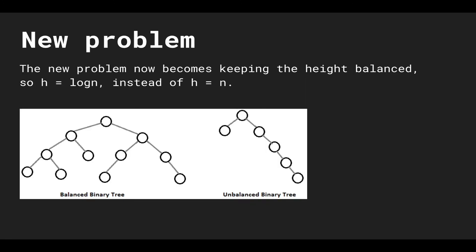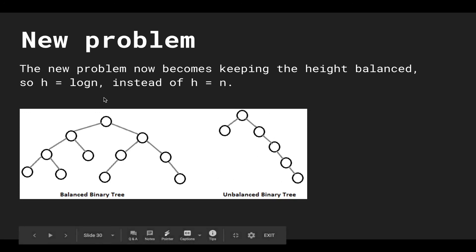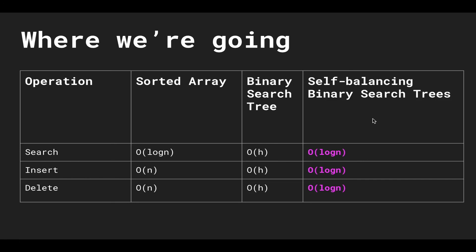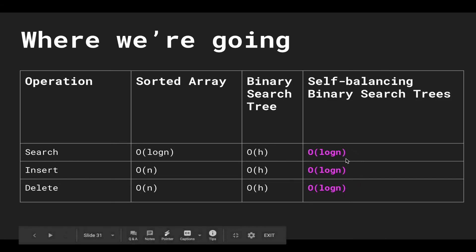The new problem we want to solve is keeping the tree balanced so the height stays O(log n). In the next video we'll go over self-balancing binary search trees, which automatically maintain a balanced height whenever you insert or delete. Because of that, all operations remain O(log n). That's it for binary search trees — see you in the next video!